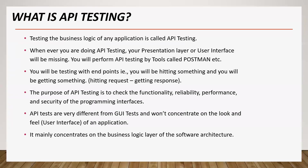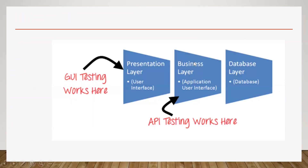This screenshot I have taken from a Google site is for understanding purposes. There are three layers: the presentation layer, the business layer, and the database layer. The database layer is a server database where your data is saved. The presentation layer is nothing but the UI of the application — developed beautifully in HTML code to give an attractive user interface.